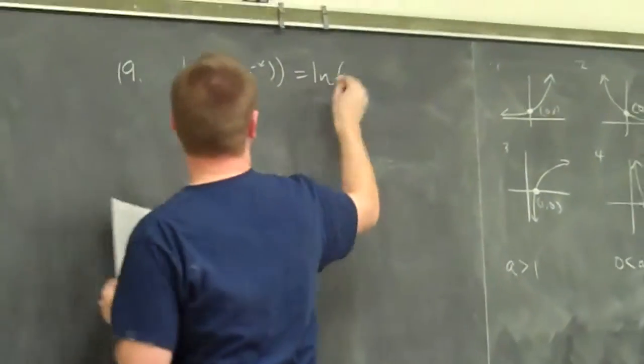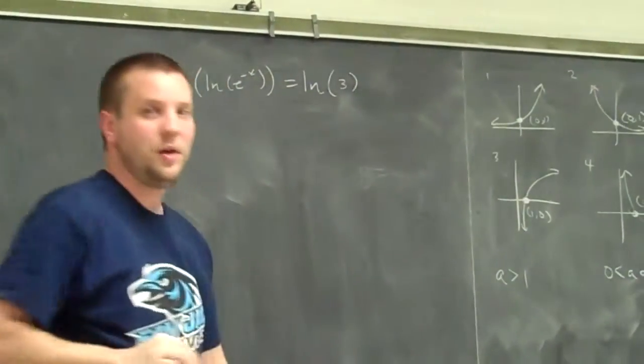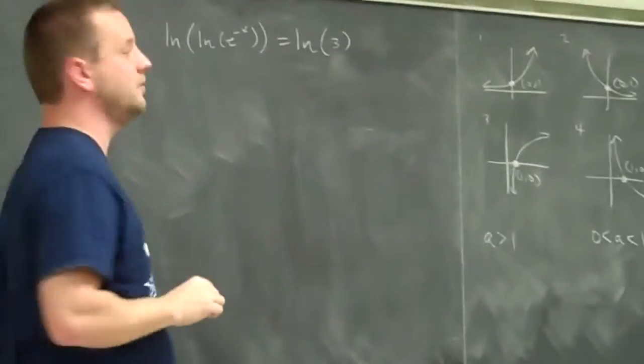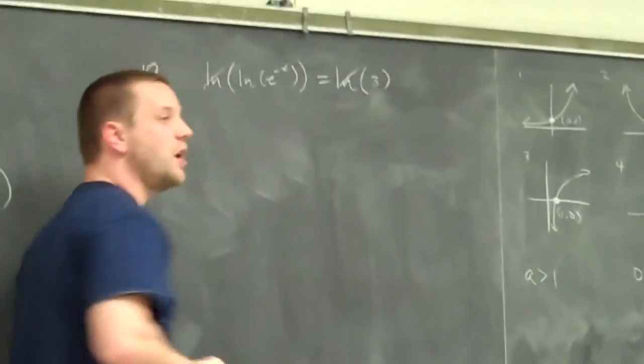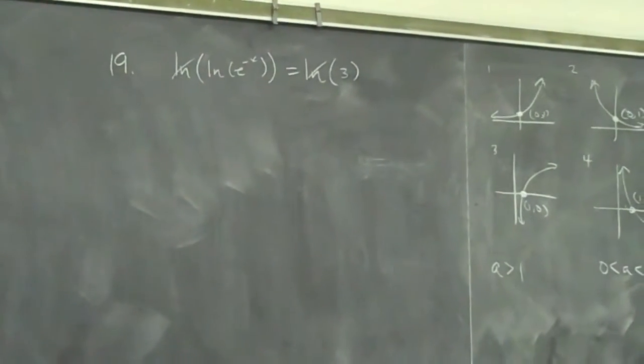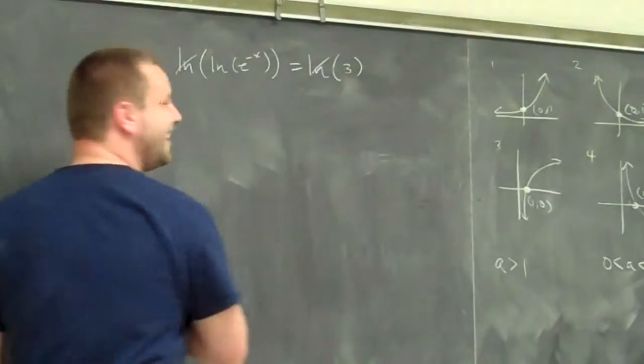And that equals the natural log of 3. How do I solve these log equals log problems? Equal to each other. Yeah. You knock off the logs, right? Then you knock off those. Yes.